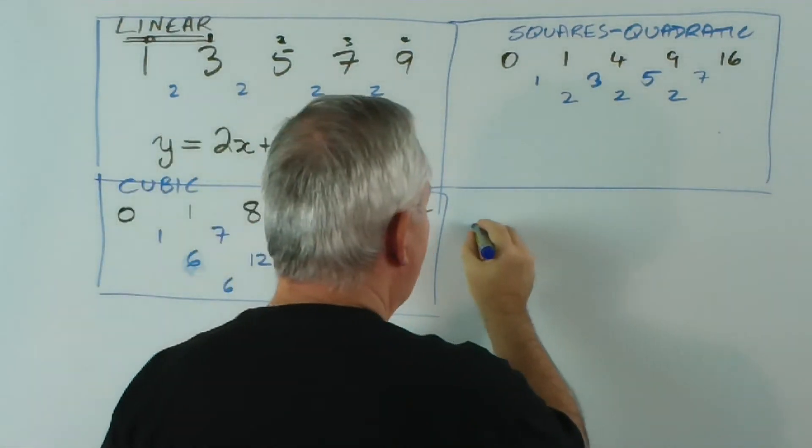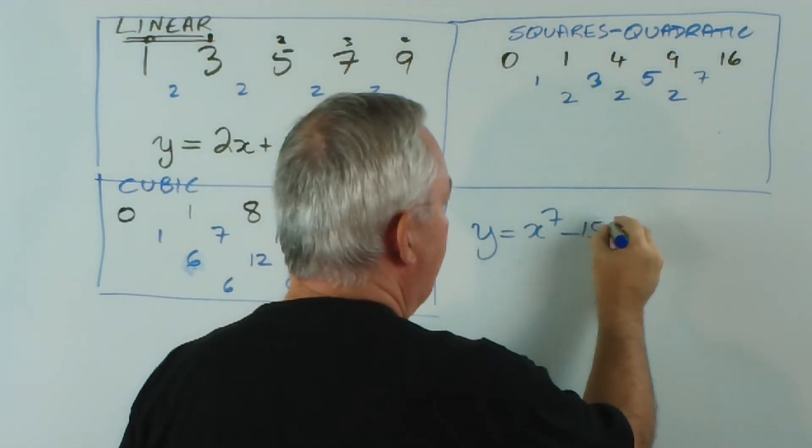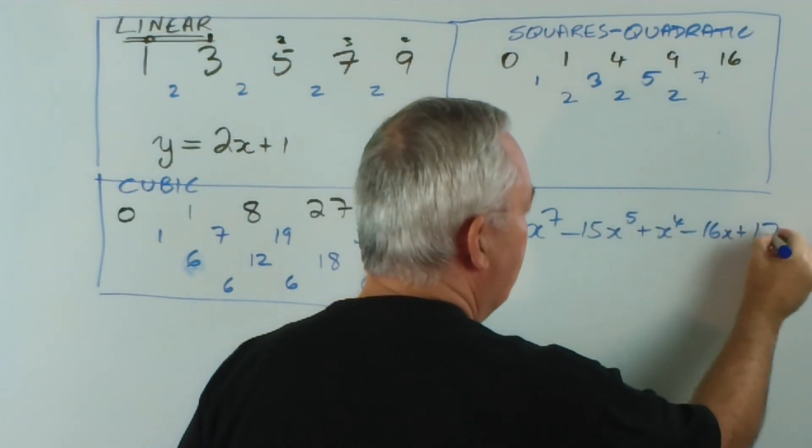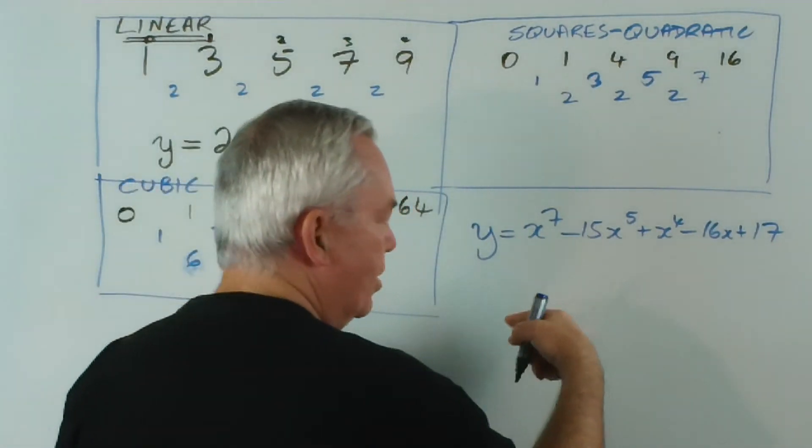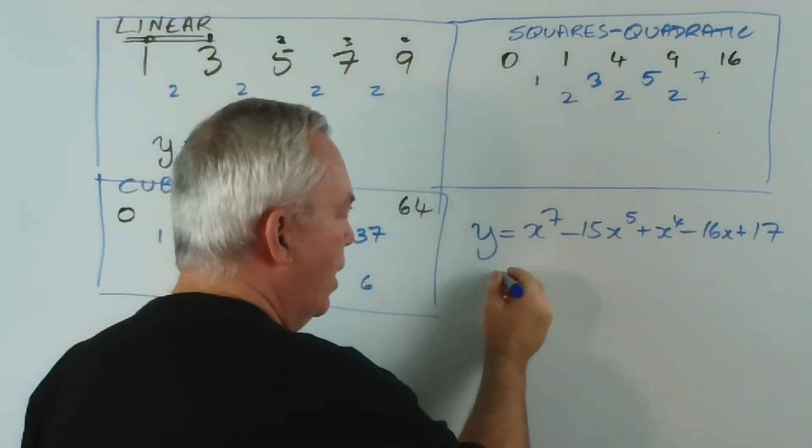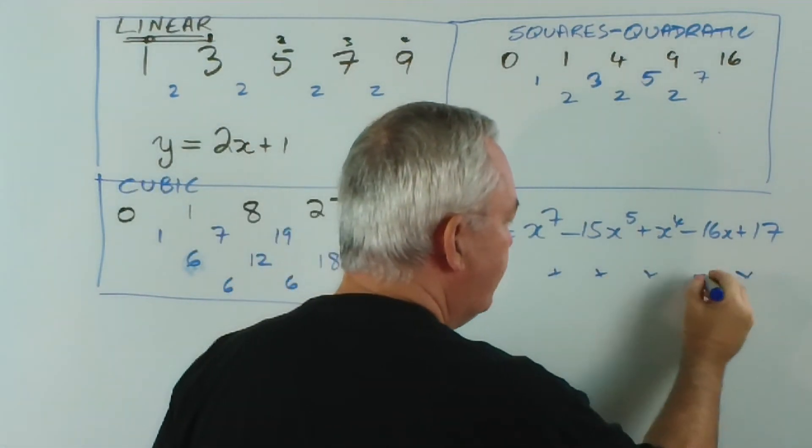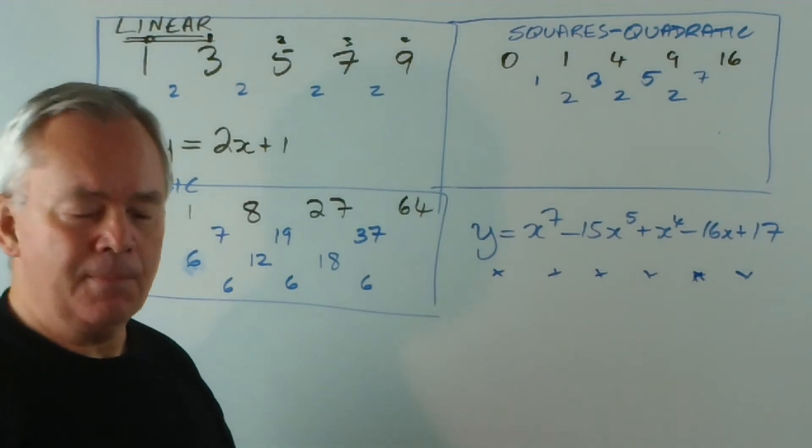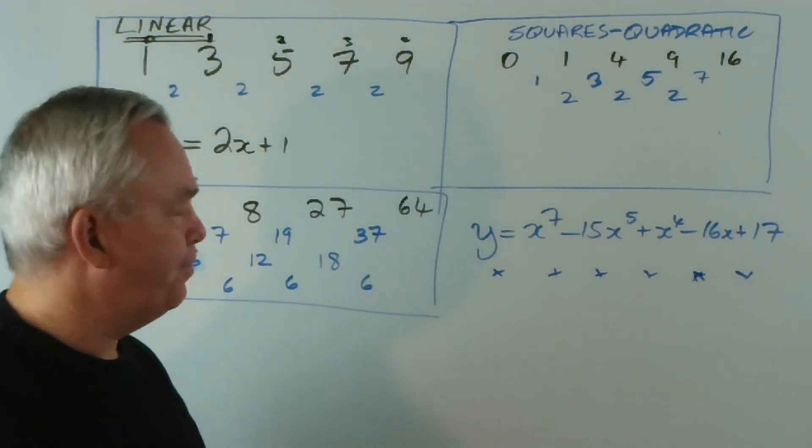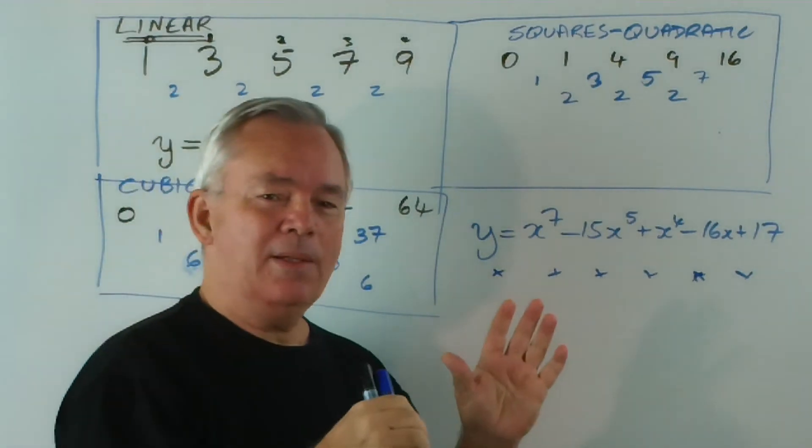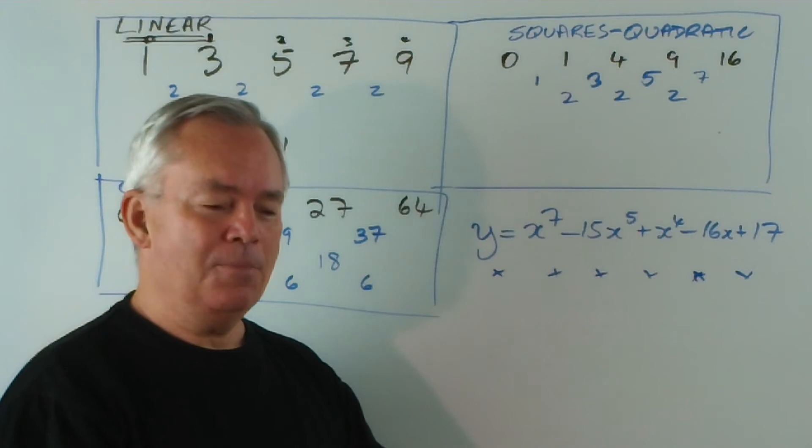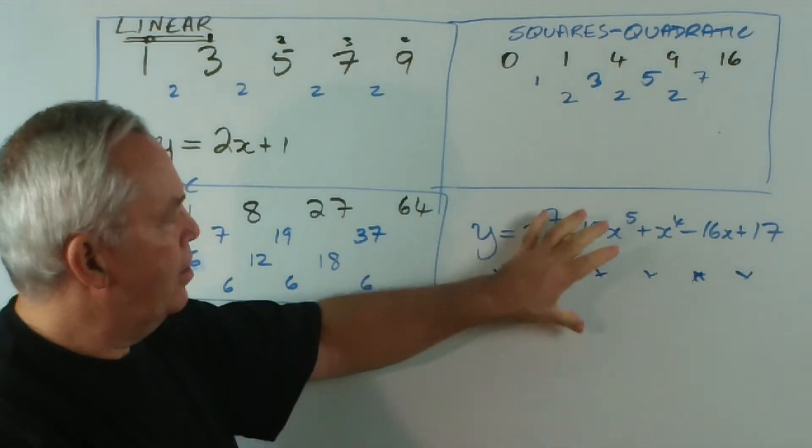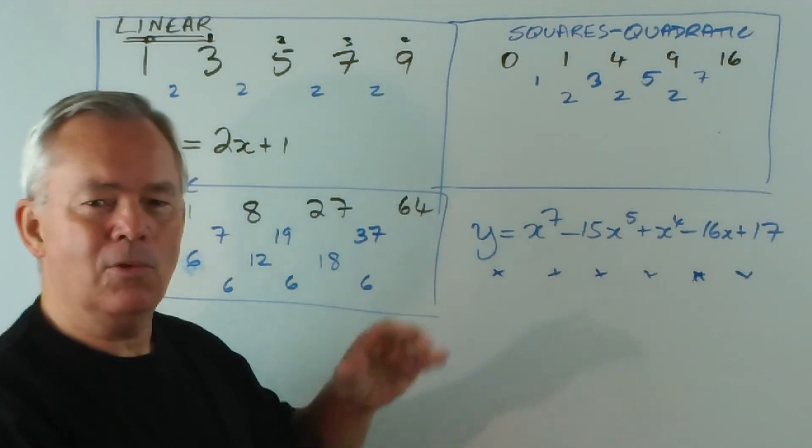So if you had a polynomial like y equals x to the 7 minus 15x to the 5 plus x to the 4 minus 16x plus 17, some horrible thing like that, and you started substituting 0, 1, 2, 3, 4 and got a series of numbers out, and then looked at all the differences, on the seventh row down, they would all be the same. How amazing is that?